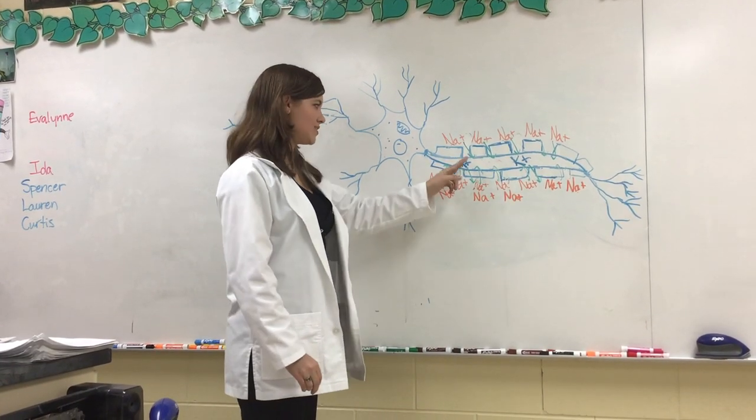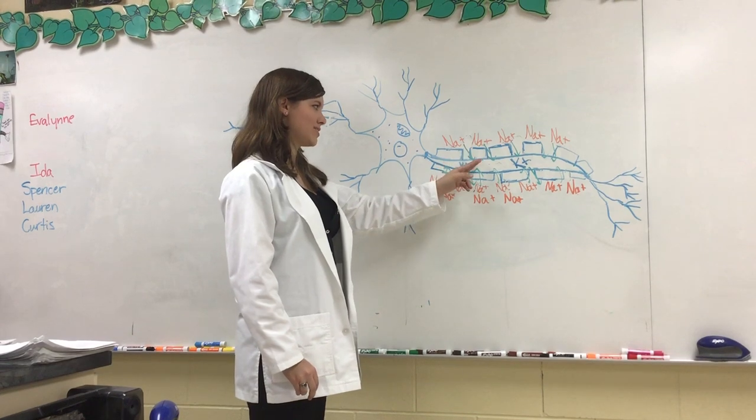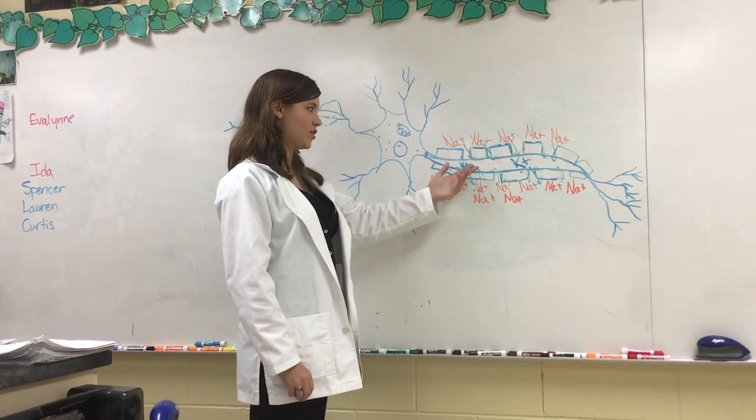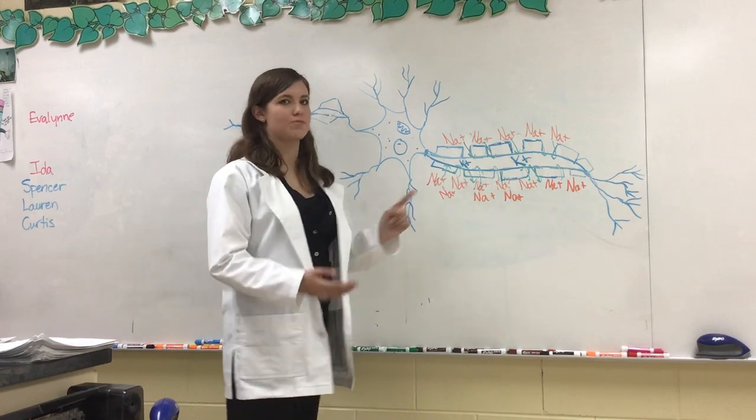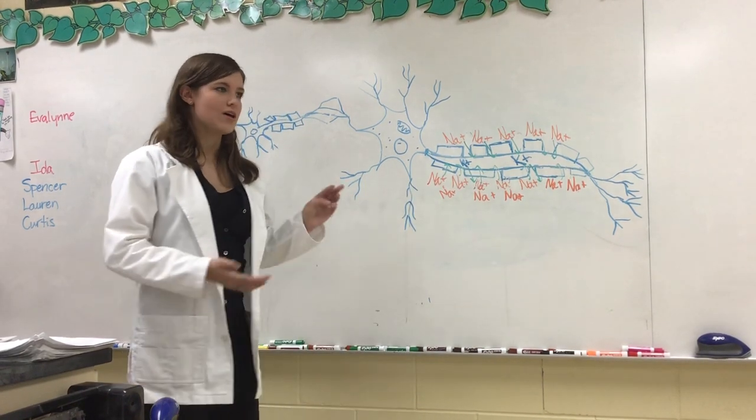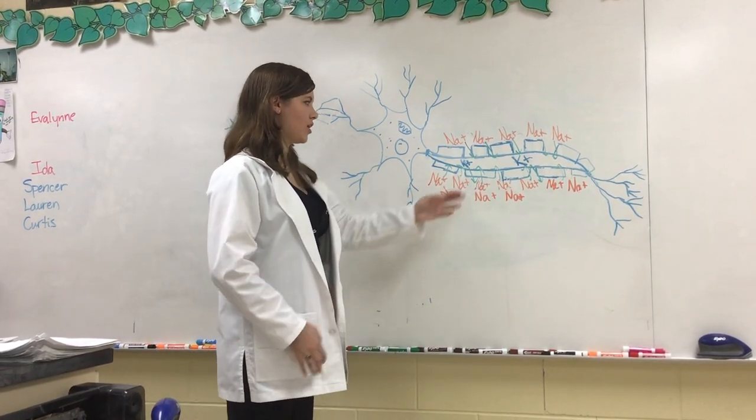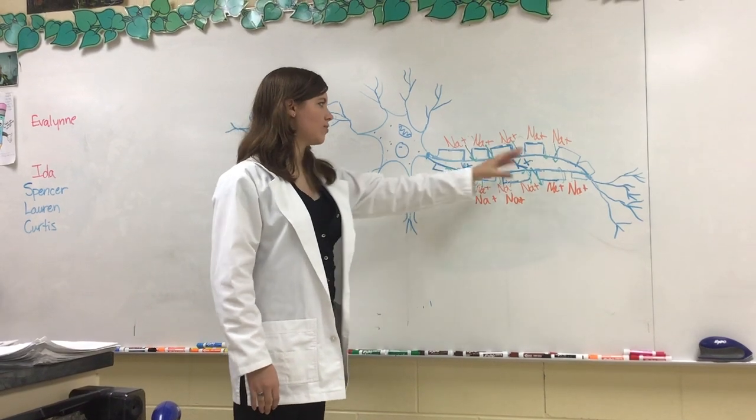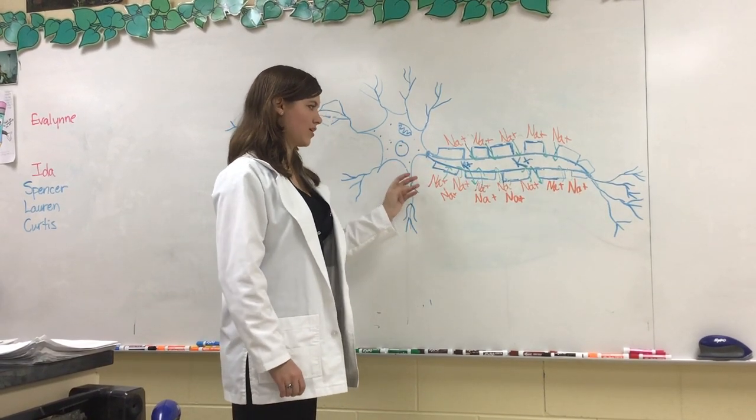This is because potassium ions, while they do exist inside the cell and they're positively charged, they're at a way lower concentration than things such as proteins and phosphates, which are all negatively charged. Therefore, the overall charge inside of the cell is negative.